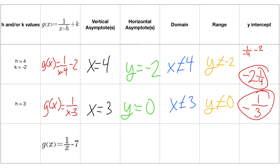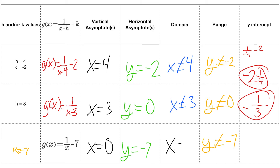For k equals negative 7 and no h: the horizontal asymptote is y equals negative 7, and the range is y does not equal negative 7, because negative 7 is where it will never quite touch. Without an h value, the vertical asymptote is x equals 0, so domain is x cannot equal 0. For the y-intercept, when x is 0 it is undefined — there is none.